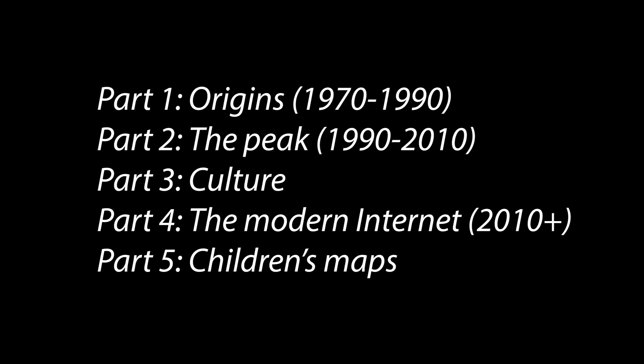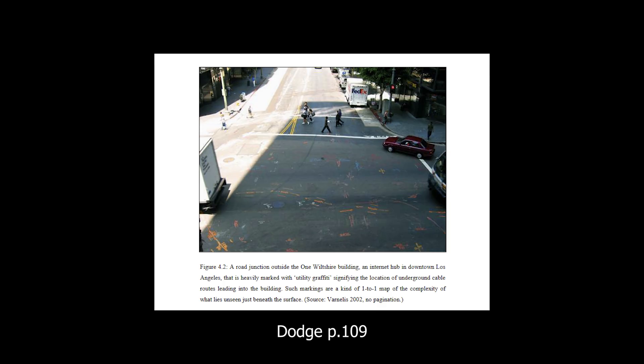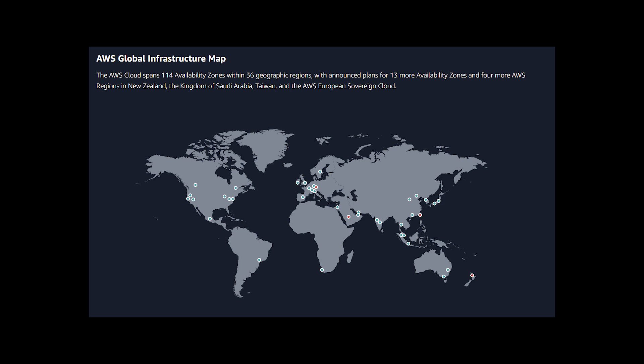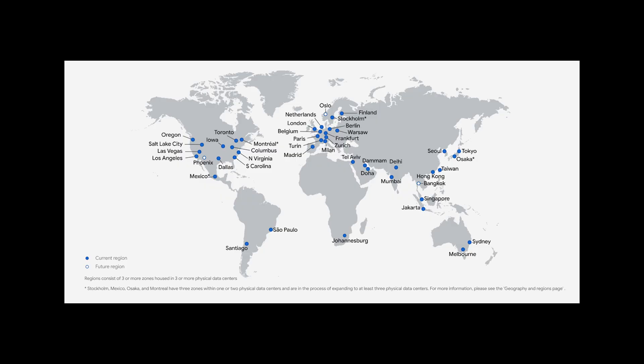Moving towards the present, maps of the internet have become increasingly sparse through the 2010s, as the internet has firmly become part of the everyday. Dodge predicted this well from 2008: the infrastructure is too invisible and naturalized, with widely available mobile data connecting end devices without any physical sensation. With the physical network well built out, software is now where money is to be made, changing the language of maps. Cloud computing providers boast about their global availability, but unlike the marketing maps of the 1990s and 2000s, these modern maps often have no connections drawn between their data centers — it is simply understood that these sites are deeply connected.